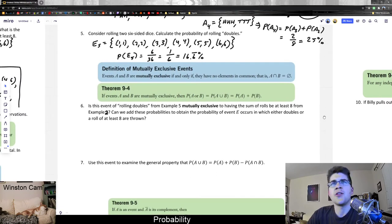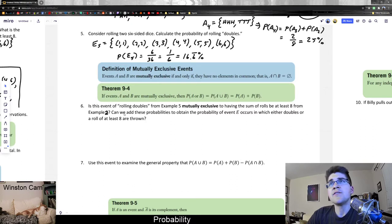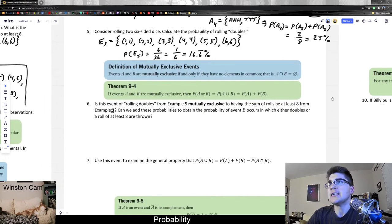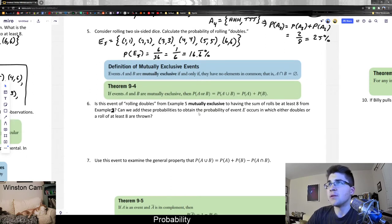So let's look at another problem. Number six says, in this event of rolling doubles from example 5, is it mutually exclusive to having the sum of rolls be at least 8 from example 2? So there's an 'is' missing in there, I apologize for that. Typos happen on accident. And so then it asks, can we add these probabilities to obtain the probability of event E occurs in which either doubles or a roll of at least 8 are thrown? But we can still answer this question just fine.